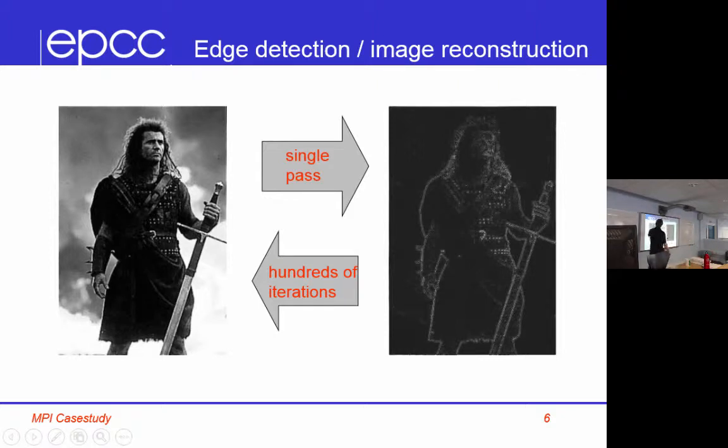But it turns out that for certain image detection algorithms, and particularly the very simple ones, it's possible to reconstruct the image from the edges. So I'm actually going to give you the edges, and you're going to have to reconstruct the image. It's a slightly fake thing to do, you wouldn't really do it in reality. But the important point is it takes hundreds of iterations, and therefore it's something that's worth parallelising. So I'm going to give you the right-hand side, and you're going to have to recreate the left-hand side.